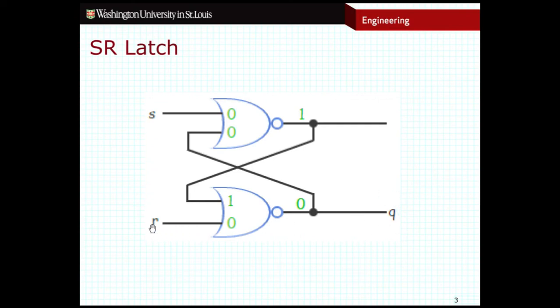R stands for RESET. So if R is high and S is low, that means we are resetting Q. That means we are putting Q to be a low signal.